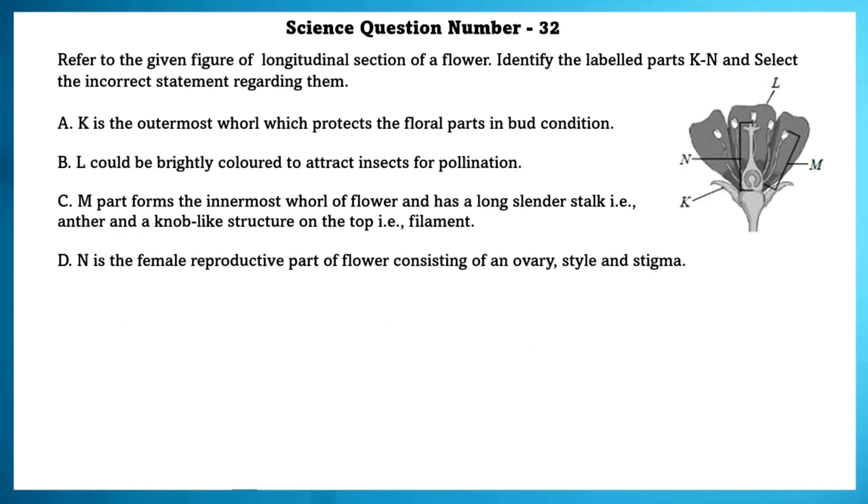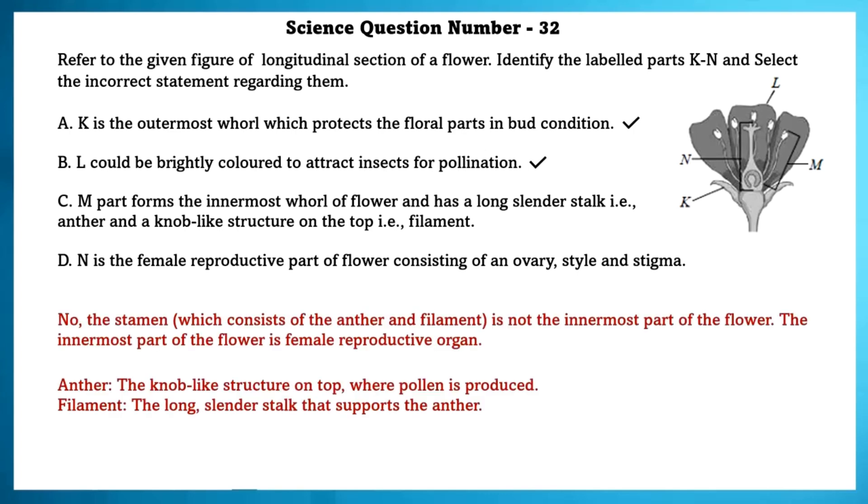Science question number 32. Refer to the given figure of longitudinal section of a flower. Identify the label parts K, N and select the incorrect statements regarding them. K is the outermost whorl which protects the floral parts in the bud condition. Yes, this is true. L could be brightly colored to attract insects for pollination. This is also true. M part forms the innermost whorl and has long slender stalk, anther and a knob-like structure on the top. Filament. No. The stamen which consists of anther and filament is not the innermost part of the flower. The innermost part of the flower is a female reproductive organ. Anther. The knob-like structure on the top where pollen is produced. Filament. The long slender stalk that supports the anther. N is the female reproductive part of the flower consisting of an ovary style and stigma. Yes, this is true.